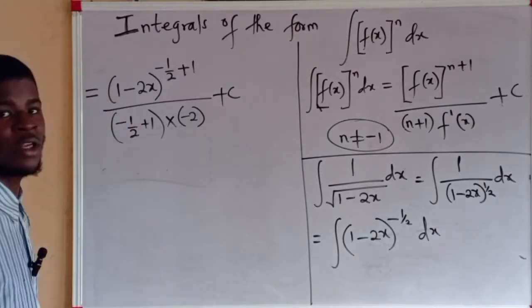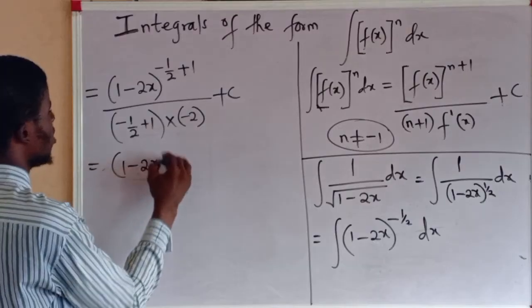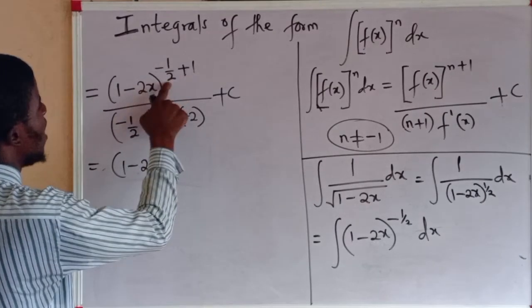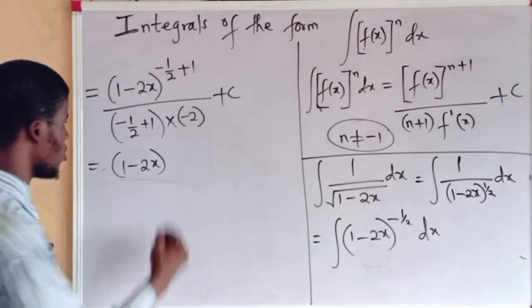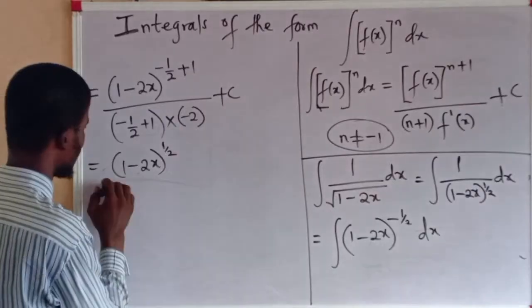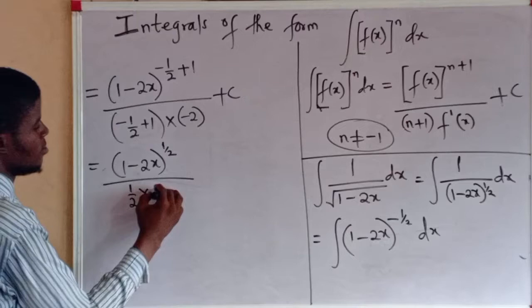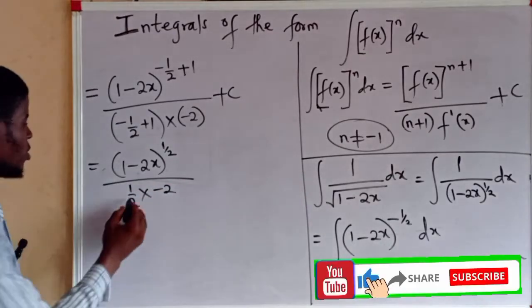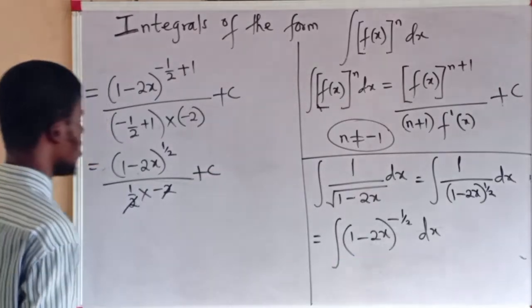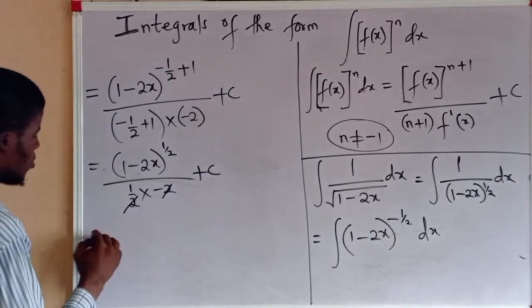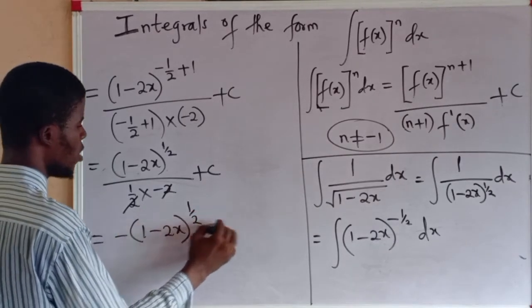And we are going to add the arbitrary constant to it. So let's simplify and we are done. We have 1 minus 2x to the power of minus 1 half plus 1 is 1 minus 1 over 2, which is half, 1 over 2. Here we still have 1 over 2 times minus 2. 2 can cancel 2, plus the arbitrary constant. So if the minus can go up, we have minus into 1 minus 2x to the power of 1 over 2 plus C.